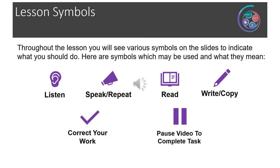Throughout today's lesson, you will see various symbols on the slides to indicate what you should be doing at each point. The first symbol asks you to listen. The second asks you to speak or repeat information. The third asks you to read the information on the slide. The fourth asks you to write or copy, and may also be used for individual tasks. The fifth asks you to correct your work, using the SQA marking instructions to mark your own answers. The final symbol asks you to pause the video to complete the task.